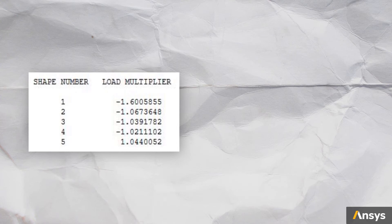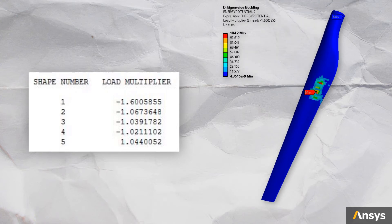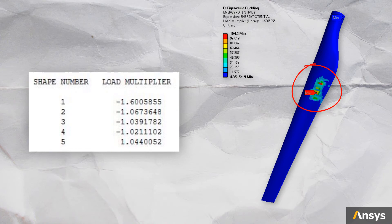If we want to further improve its design, once again we can look at the strain energy plots. This time, we can see that this region can use some reinforcement to avoid buckling.